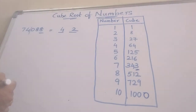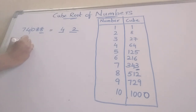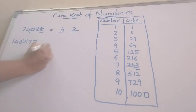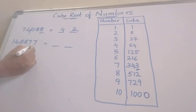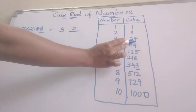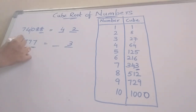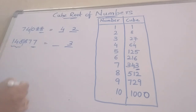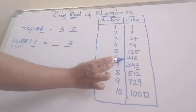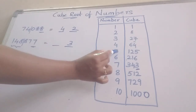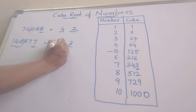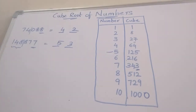Now one more example: finding the cube root of 148877. First observe the last digit, which is 7. Where is 7 in the table? That is 27, so directly write 3. Now we omit the last 3 digits and take 148. 148 lies between 125 and 216, so we take the smaller number, which is 5. The answer is 53.